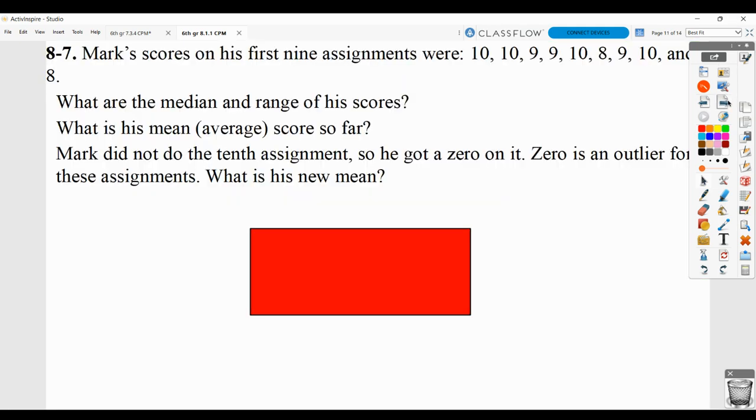For 8.7, Mark's scores on his first nine assignments were these. What's the median and range? What is the mean or average score? And Mark did not do the 10th assignment, so he got a zero on it. Zero is an outlier for these assignments. What's his new mean?